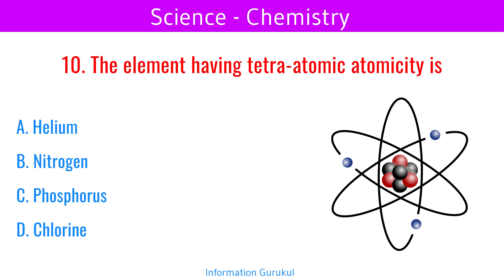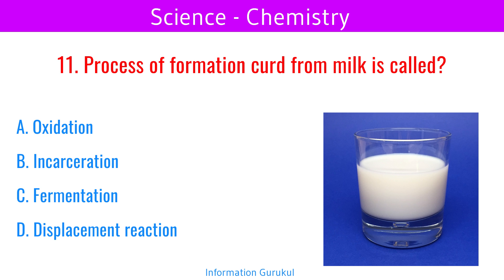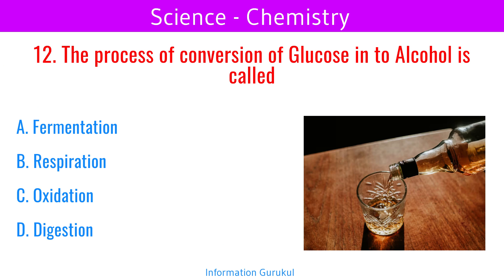The element having tetra-atomic atomicity is phosphorus. The process of formation of curd from milk is called fermentation. The process of conversion of glucose into alcohol is called fermentation.